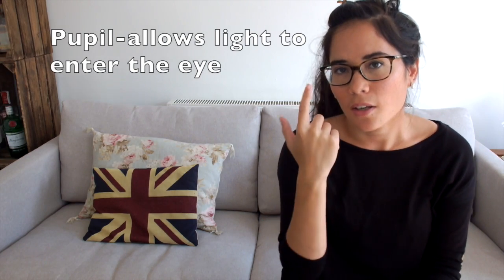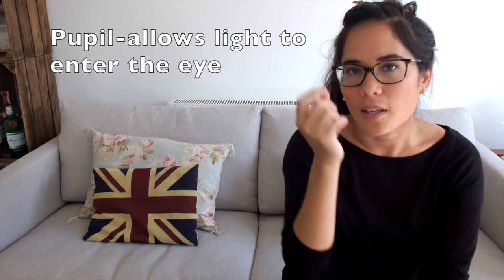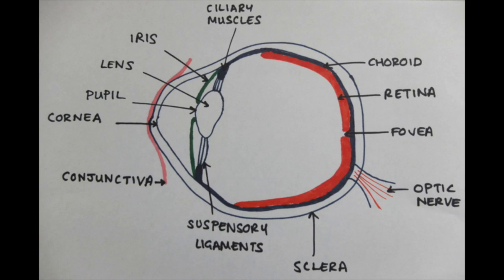So we've gone through the cornea, which is incidentally where they'll operate if you have laser eye surgery. Then we enter the pupil. Remember the pupil's just a hole — it looks black, but it's just a hole, it's not really a structure. And that's surrounded by the iris, which is different colours — mine's brown, maybe some of yours are blue, green, or a lovely grey colour.